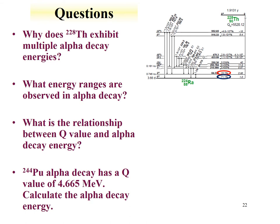For an even-even nucleus like thorium-228, we'll see that it primarily decays to the even-even ground state of the daughter. What are some alpha decay energy ranges that can be observed? The lowest energy observable is neodymium-144 with an alpha decay energy of 1.8 MeV, and polonium-212m for the metastable state decays with an energy of 11.6 MeV. That's a reasonable range — generally between 4 and 6 MeV.